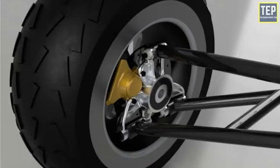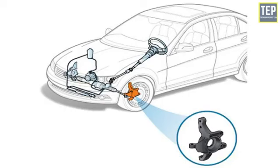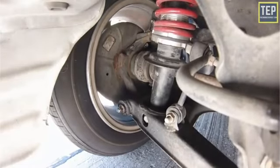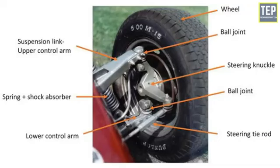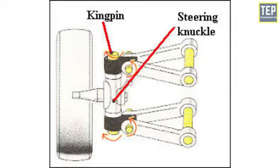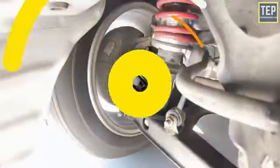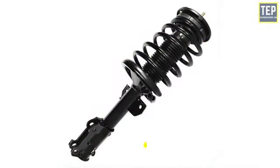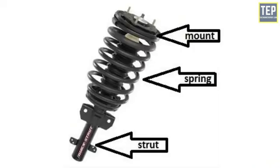The knuckle or upright is used to connect the wheels to the suspension system. The knuckle arm is positioned at the front wheel of the car, and the wheels rotate continuously on the spindle shaft that comes from the knuckle arm. It is also connected to the lower arm using a ball joint. The knuckle has a caster angle and a kingpin on the front wheels, which helps in steering the vehicle left or right.